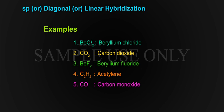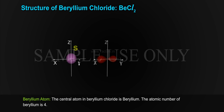Examples of SP hybridization: 1. BeCl2 (beryllium chloride), 2. CO2 (carbon dioxide), 3. BeF2 (beryllium fluoride), 4. C2H2 (acetylene), 5. CO (carbon monoxide).